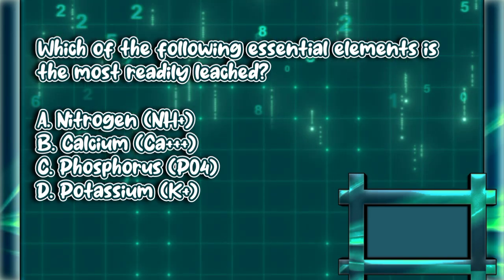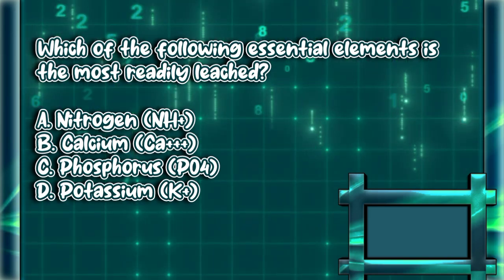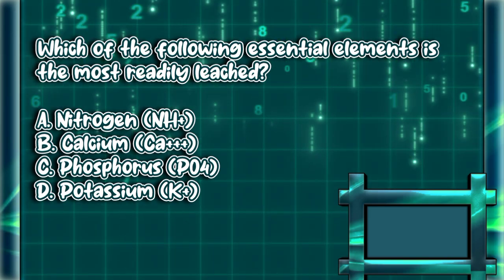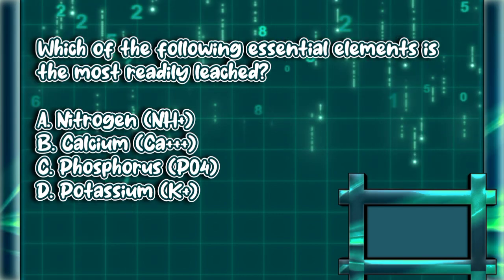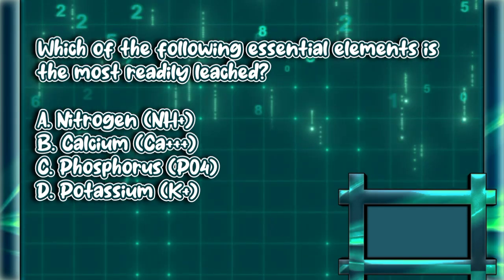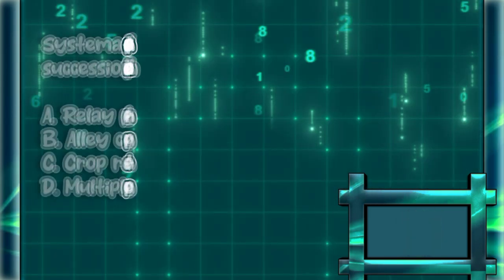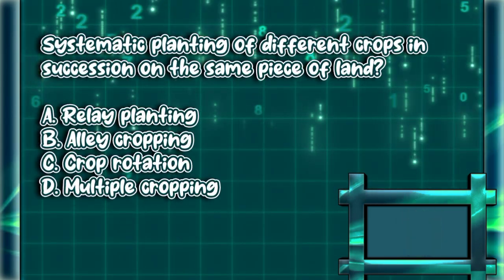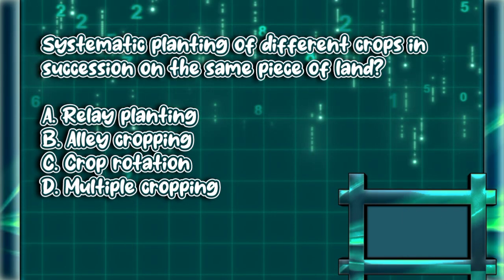Which of the following essential elements is the most readily leached? a) nitrogen, b) calcium, c) phosphorus, d) potassium. The answer is letter B.